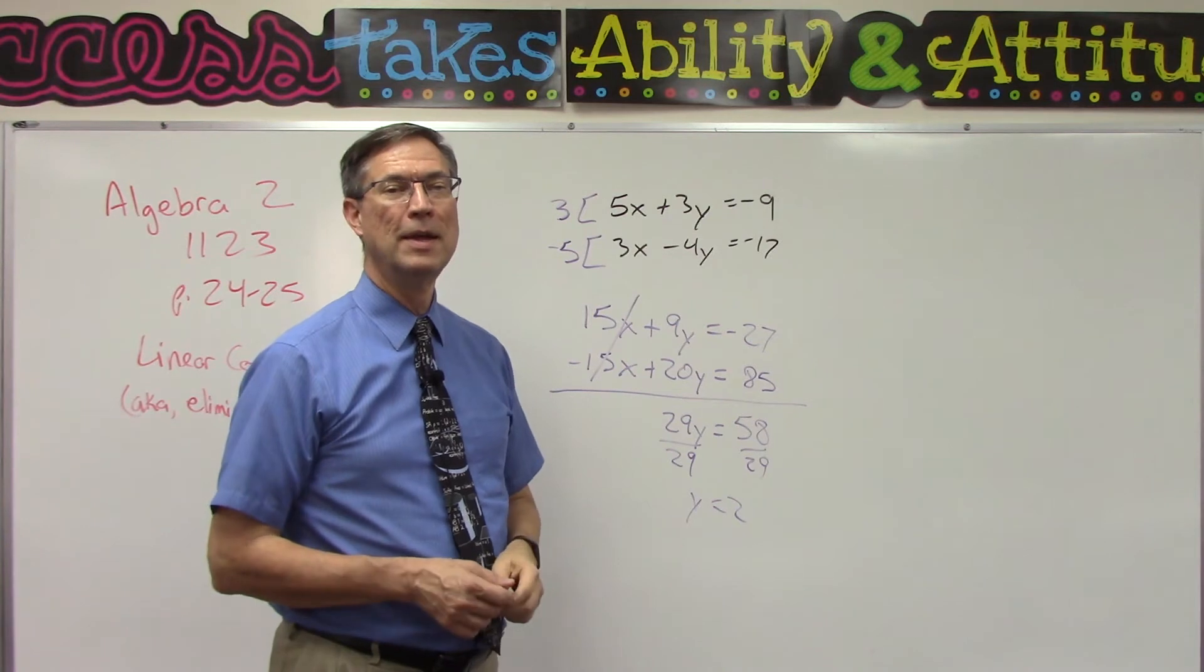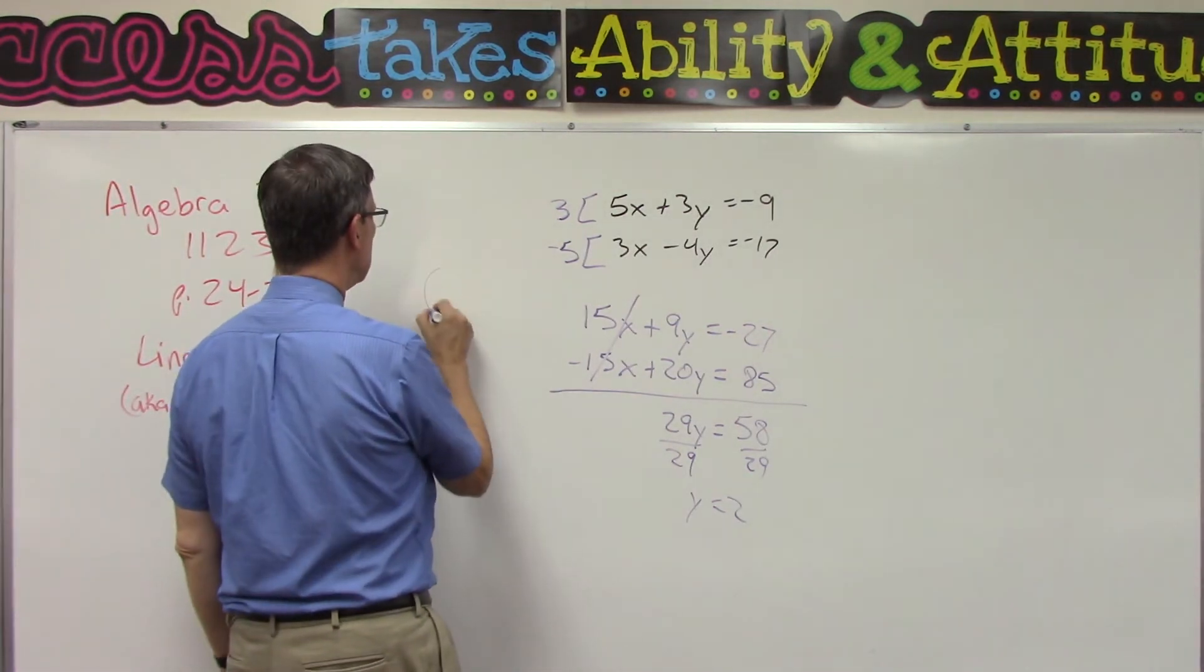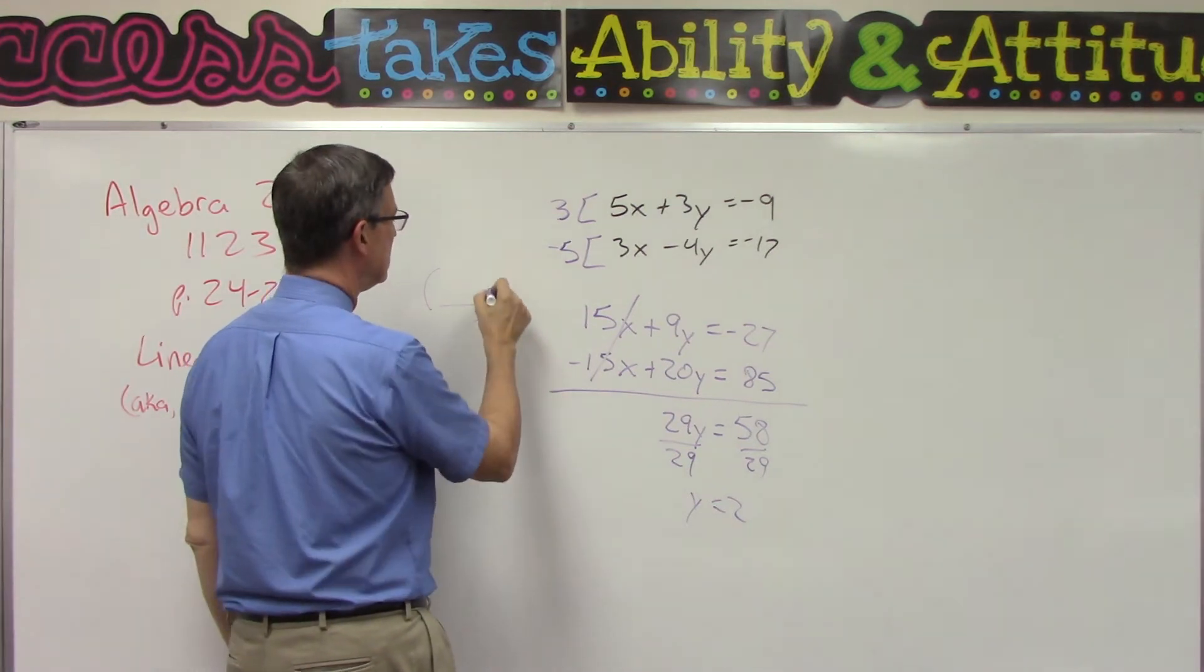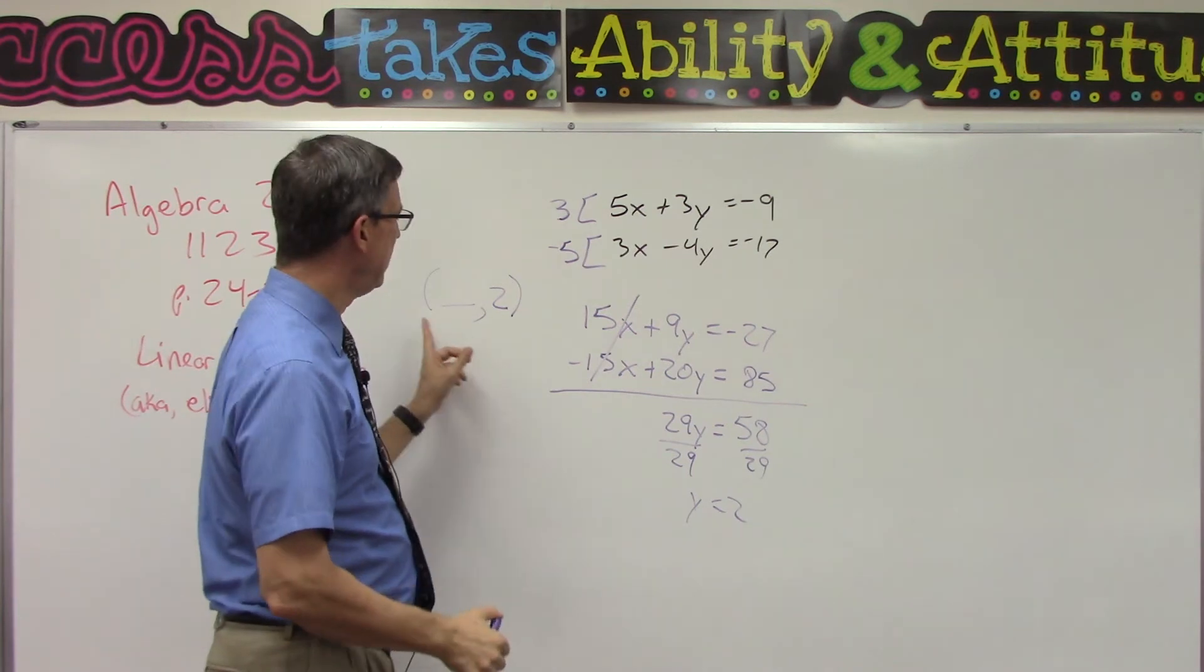But then you would take the x value, plug it into either equation in place of x, solve for y. So your final answer is going to be something for x, which you get to find out what that is. The 2 is the y value, so it's an ordered pair (x, y).